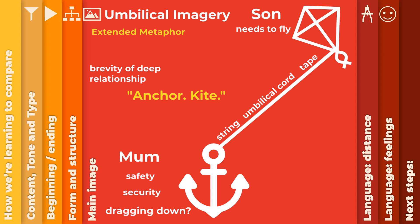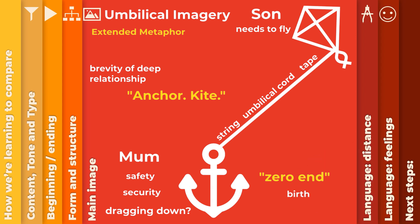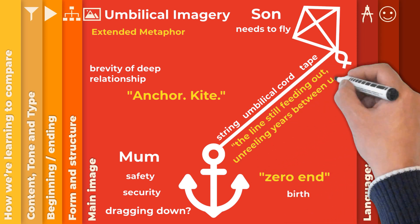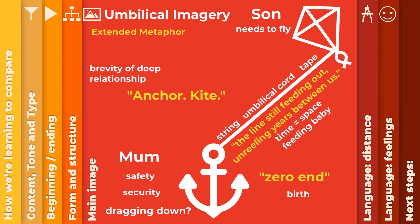That is enough for an essay, but you might like to look through the poem and add a few details. He addresses his mother 'observing you at the zero end', because she was there at the beginning of his time. He says 'the line's still feeding out, unreeling years between us', wrapping both time and space into a single object, with a hint of the feeding that you might associate with a small baby.